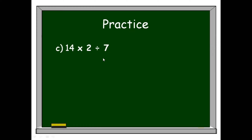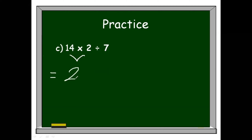Let's examine our expression. This expression has only multiplication and division, so we're going to solve this from left to right. We perform 14 times 2. 14 times 2 gives us 28. Don't forget to copy the remaining component: 28 divided by 7. 28 divided by 7 is equal to 4.